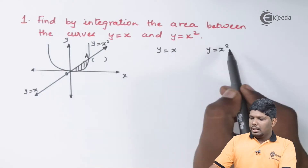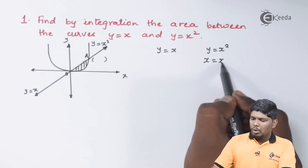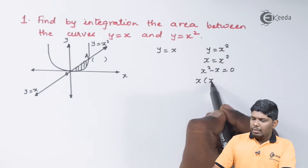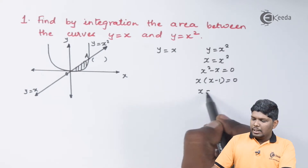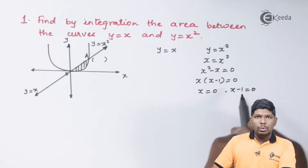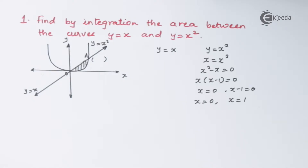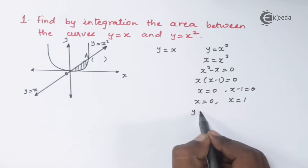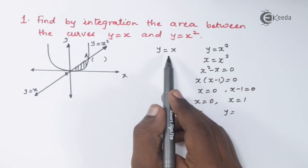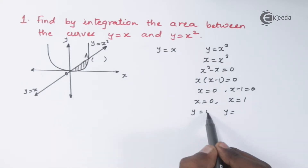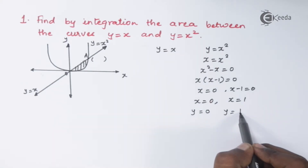We will simultaneously solve these two curves. Put y = x into the equation y = x², which gives x = x², that is x² - x = 0. Taking x common, we have x(x - 1) = 0. Therefore x = 0 and x = 1. The corresponding values of y: when x = 0, y = 0, and when x = 1, y = 1.